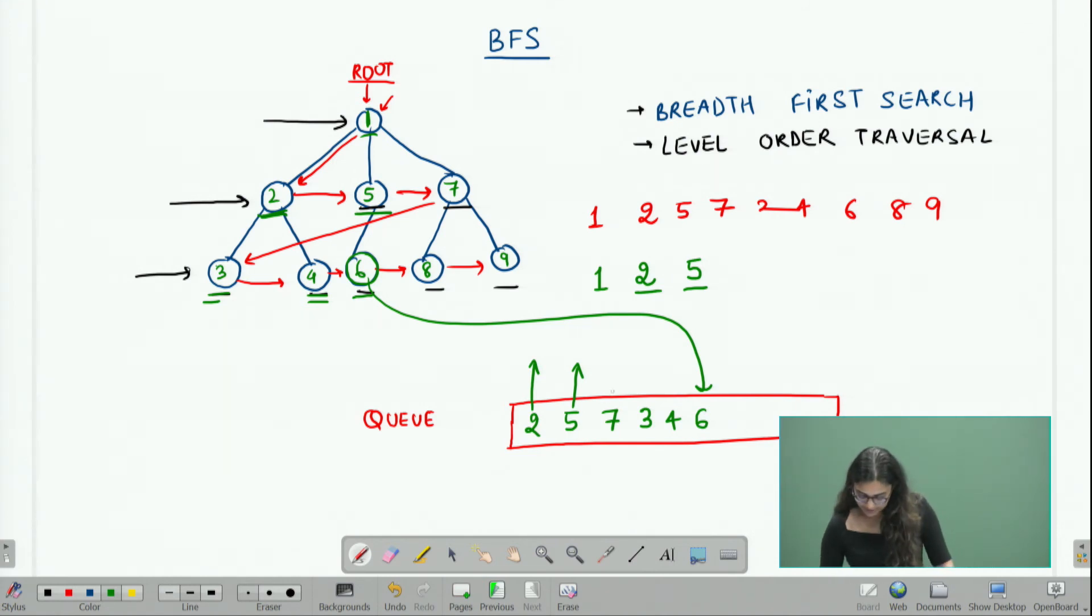Now my next element in the queue is 7. When I look at 7, I can print 7, and at the same time, because I know I have to explore its children at a later stage, I can push 8 and 9 into the queue.